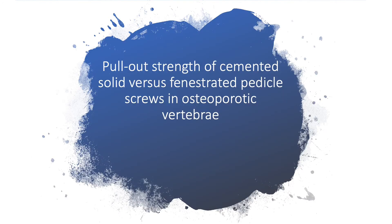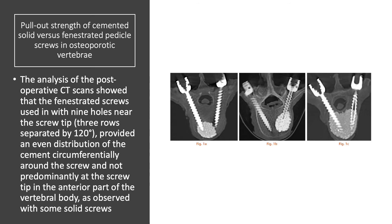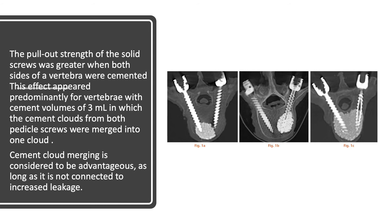Regarding pull-out strength of cemented solid screw versus fenestrated pedicle screw in osteoporotic bone: analysis of post-operative CT scans showed that fenestrated screws with holes near the screw tip provided even circumferential distribution of cement around the screw, rather than predominantly at the screw tip in the anterior vertebral body as seen with some solid screws. Hence, fenestrated screws had better grip and better cement distribution. The pull-out strength of the solid screw was greater when both sides of the vertebrae were cemented, especially with cement volumes of 3 milliliters where cement clouds from both pedicle screws merged.